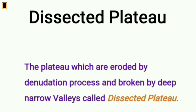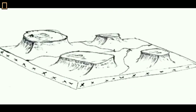Dissected Plateau: plateaus that are eroded by denudation processes and broken by deep narrow valleys are known as dissected plateaus. They are formed by different erosional and denudational processes. Earth movements cause upliftment of the earth's crust, and if the surface is covered with alternating hard and soft rocks, erosional activities like weathering, mass wasting, and river action erode soft rocks faster than hard rocks. As a result, hard rocks stand alone retaining their flatness and equality of height, forming dissected plateaus.